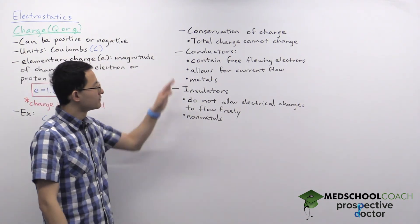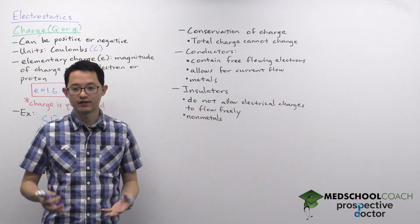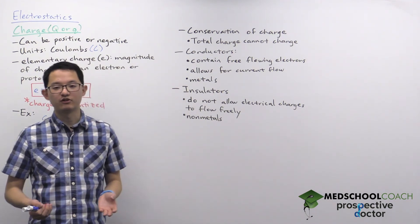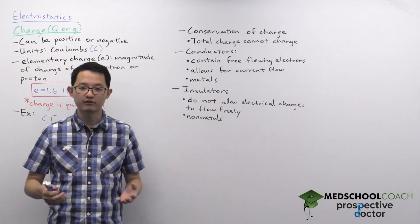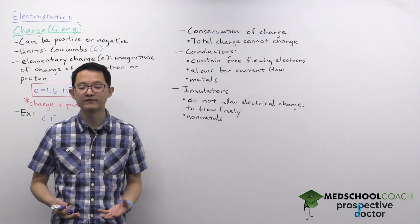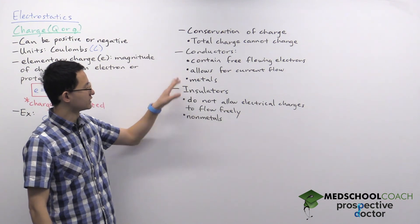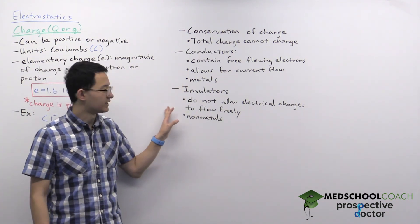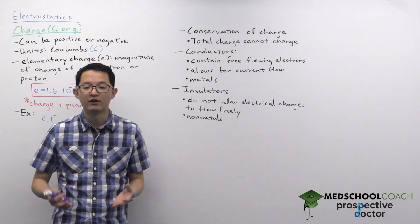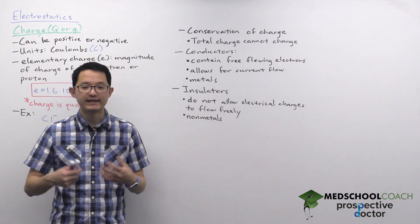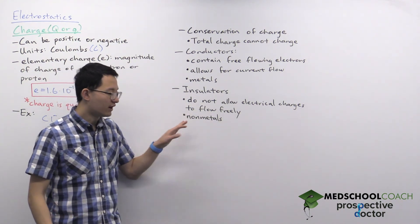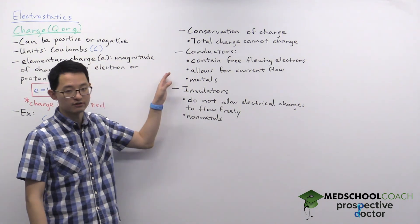Conductors and insulators. Conductors contain free flowing electrons and allow current to freely move through them, and this is essentially looking at metals. So often when we're looking at electrical devices, we're using metals to conduct electricity. For example, copper wire is used extremely often in electrical devices to allow current to flow through it. Insulators is essentially the opposite of conductors — they do not allow free electrical charges to flow through them. So that means if an insulator gains charge, that charge will be held on for a very long period of time. Insulators are non-metals, while metals are conductors.